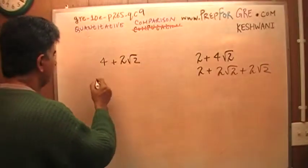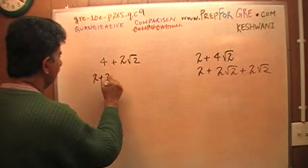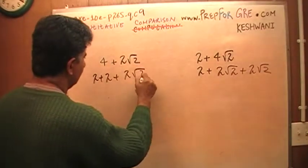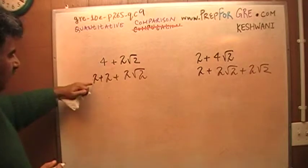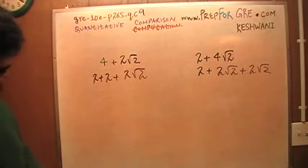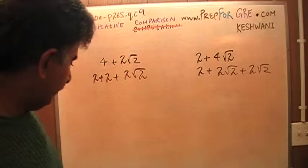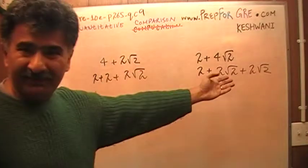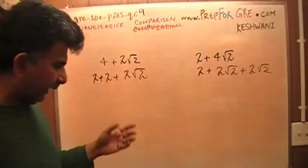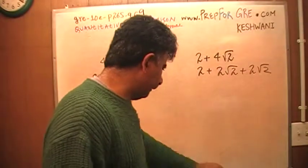And on this side I have 2 plus 2 plus 2 root 2. I wrote 4 as 2 plus 2. I hope you realize now where I'm going with it. Of course, in the real exam I would not do all this thing. This is silly. I'm just doing it for your benefit so that you can see what I'm doing here.